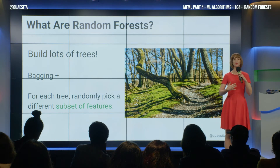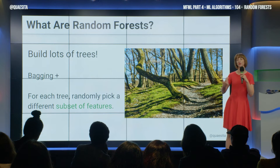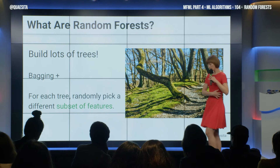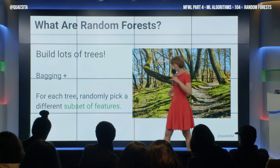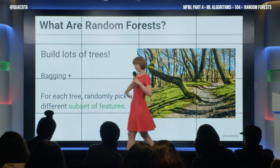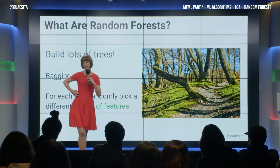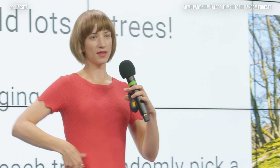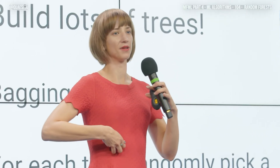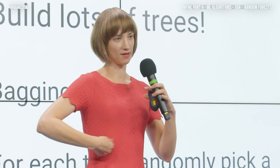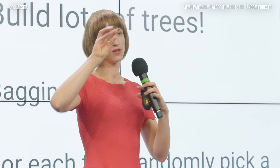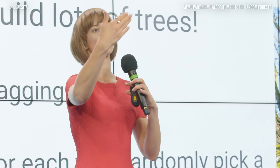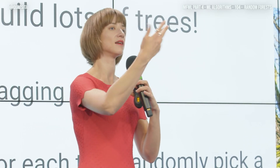And usually it's implemented with both of them. So you take some sample of the instances, and then within them you take some sample of the features, so you end up with kind of like a little square of your data, and then you fit the tree on that little one, and then you do this again and again and again.